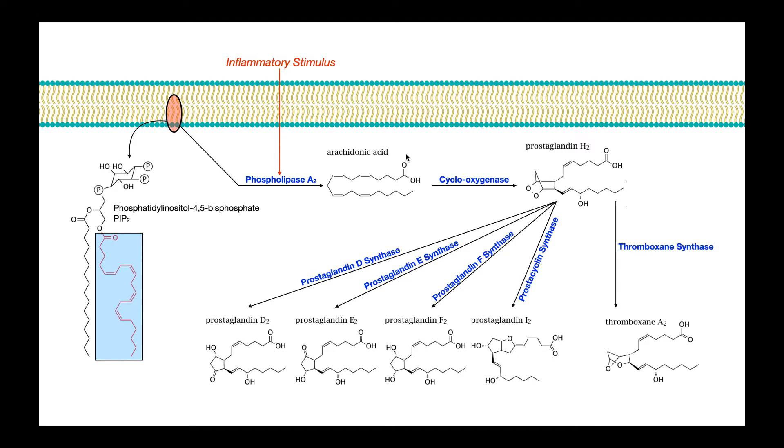Now arachidonic acid from the diet is considered pro-inflammatory. It itself is not inflammatory. However, as you can see here through this pathway, it will be transformed into a variety of compounds, most of which are inflammatory.